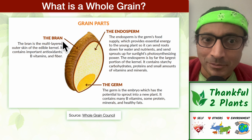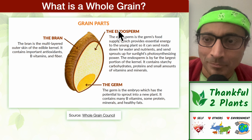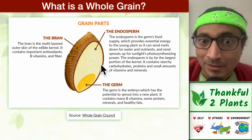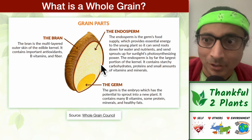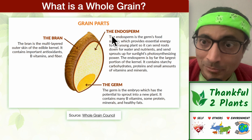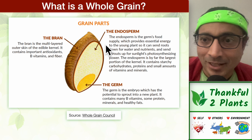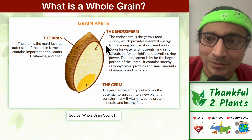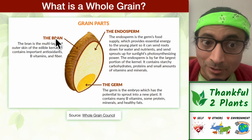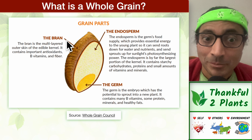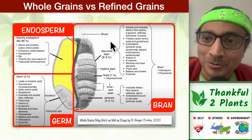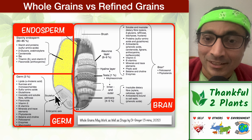A whole grain has three parts: bran, germ, and endosperm. The endosperm is the carbohydrate-rich, sweet inner portion of a whole grain. Many of us seek to consume the endosperm-rich part because it's sweeter and also improves shelf life. But in the process of eliminating or reducing bran and germ, we lose a lot of micronutrients, including fiber.